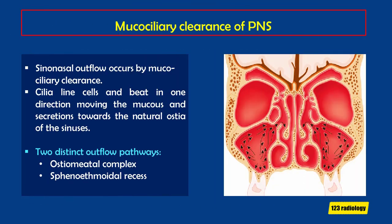Sinonasal outflow occurs by mucociliary clearance. We have cilia that line all of these cells, and they beat in one direction, moving the mucus and secretions towards the natural ostia of the sinuses. There are two distinct outflow pathways: the ostiomeatal complex and the sphenoethmoidal recess.